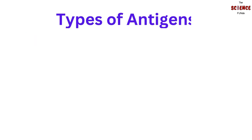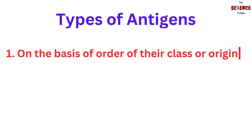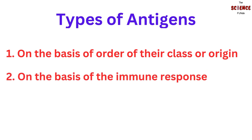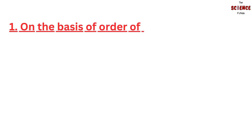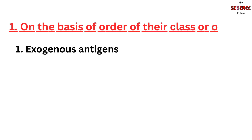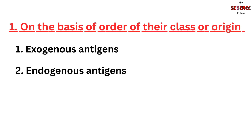Let's move to the types of antigens. Antigens are classified based on two categories: first, on the basis of the order of their class or origin, and second, on the basis of the immune response. Based on the order of their class or origin, antigens are classified into exogenous, endogenous, and autoantigens.